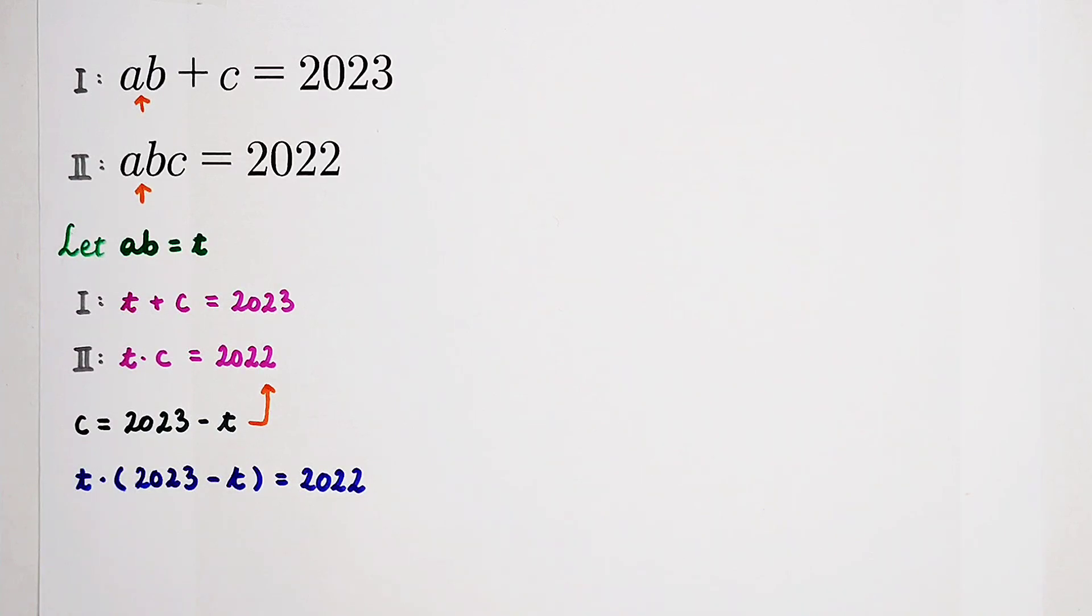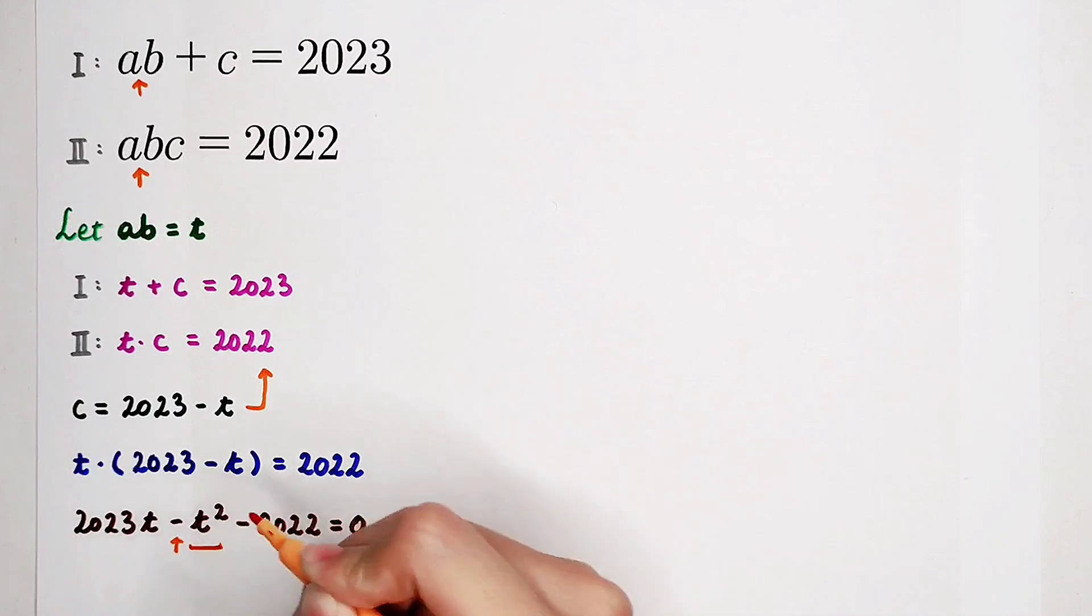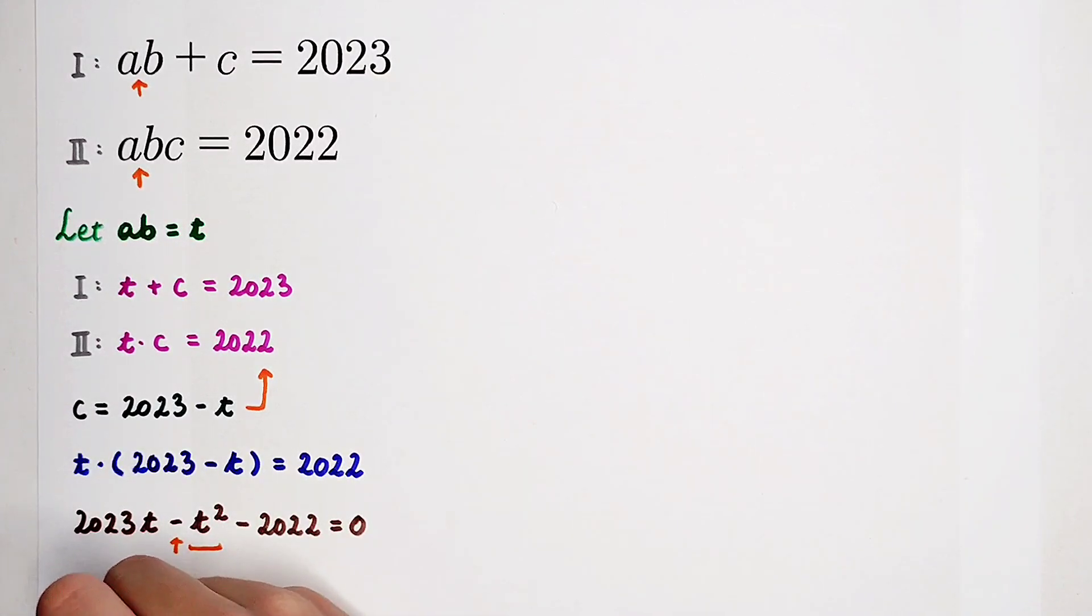Then, the second equation will become an equation about t, a quadratic equation. t times (2023 - t) = 2022. Transformation is the only thing that we can do. Here is 2023 times t minus t squared. We can subtract 2022 from both sides. The coefficient of t squared is negative 1. We don't like that. Positive 1 is the best choice. We can multiply by minus 1 on both sides and then this equation will become t² - 2023t + 2022 = 0.